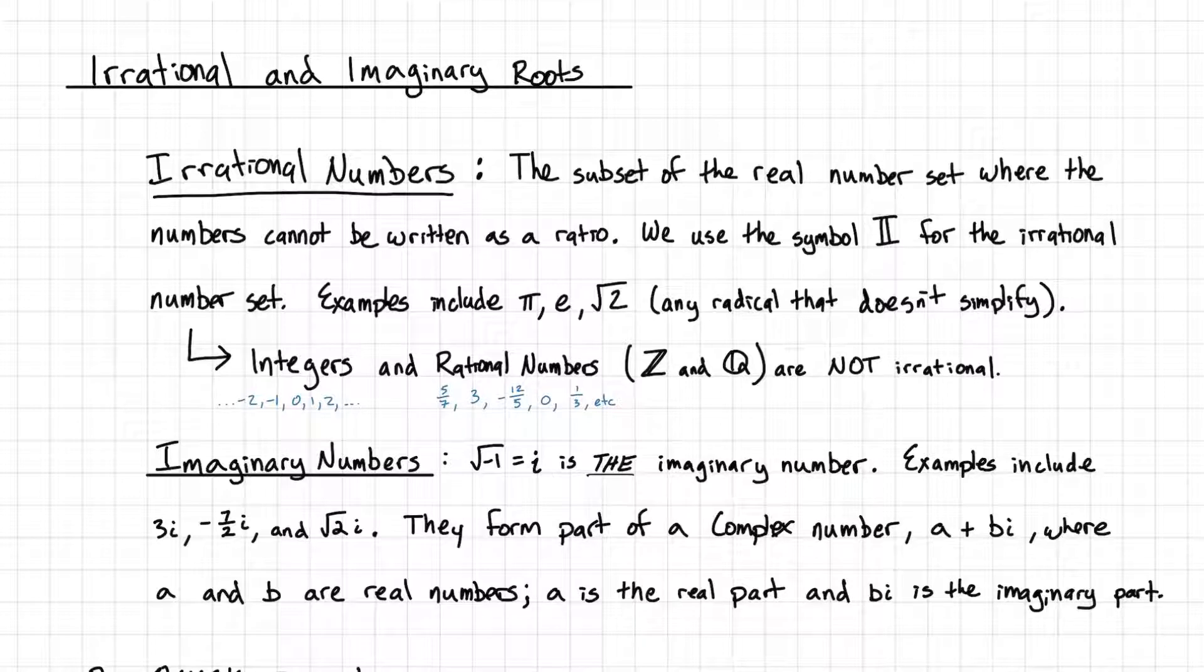Before we do, let's make sure we're all on the same page about irrational numbers and imaginary numbers. Irrational numbers are the subset of the real number set where numbers cannot be written as a ratio. A ratio is just basically a fraction. So irrational numbers are all the numbers that are real that can't be written as a fraction. We use this symbol, this double bar I, to represent the irrational number set.